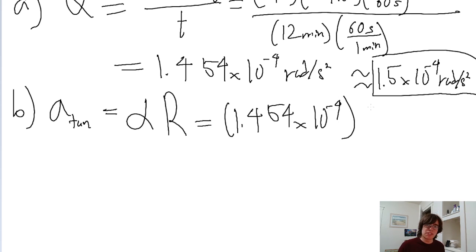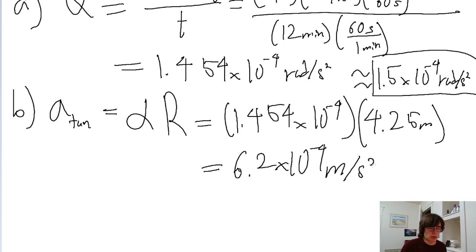The angular acceleration we just found is 1.454 × 10⁻⁴, and the problem tells us that the ship has a diameter of 8.5 meters. Divide that by 2 to get the radius of 4.25 meters. Put this into a calculator, and we get a tangential acceleration of 6.2 × 10⁻⁴ meters per second squared.